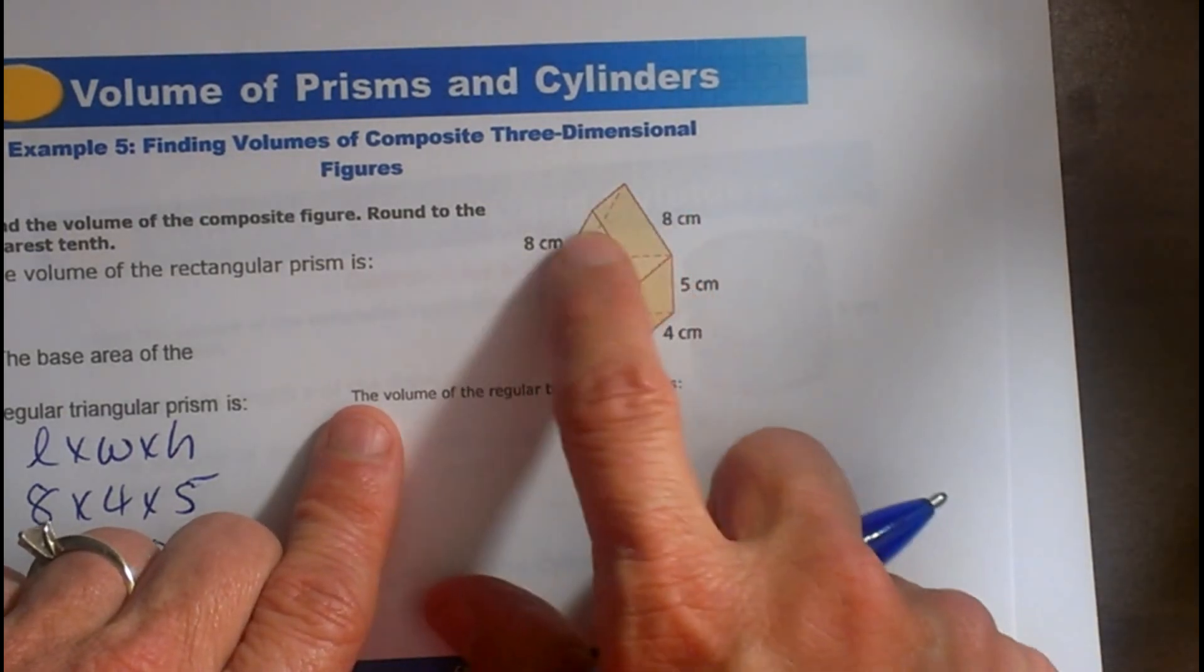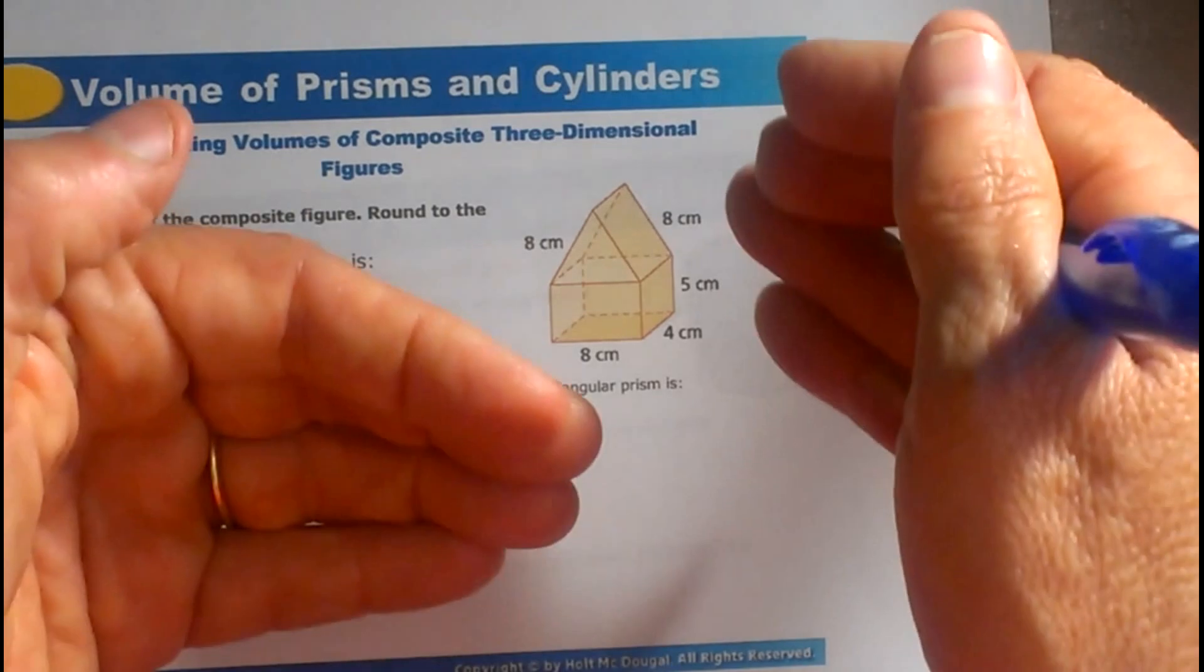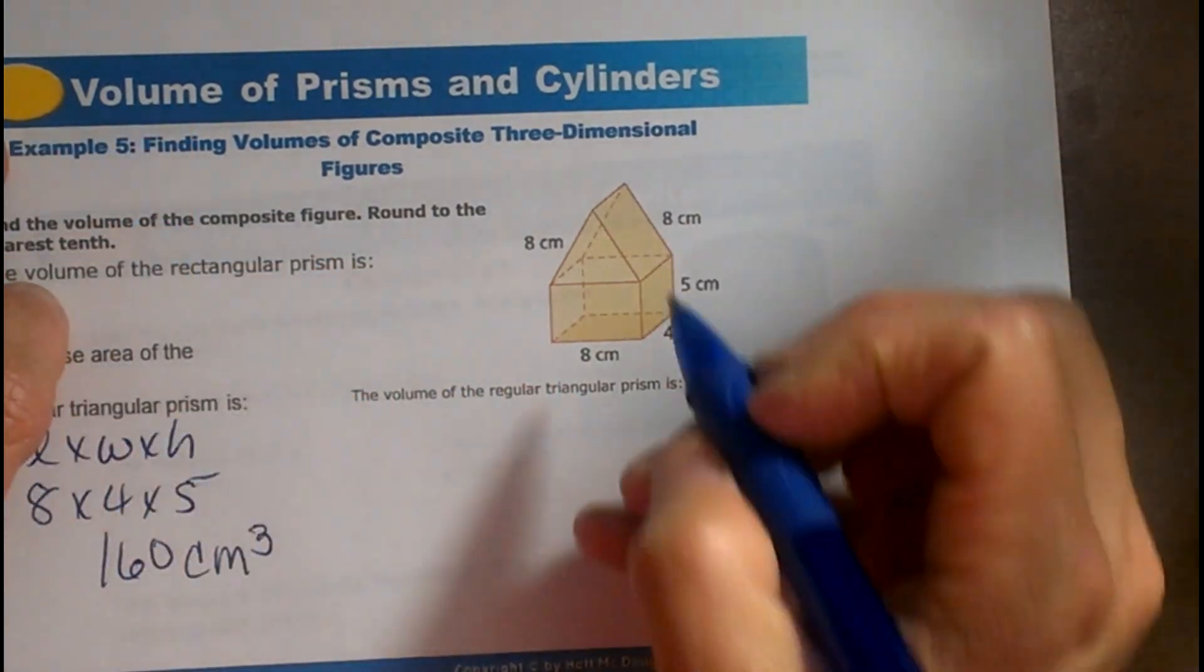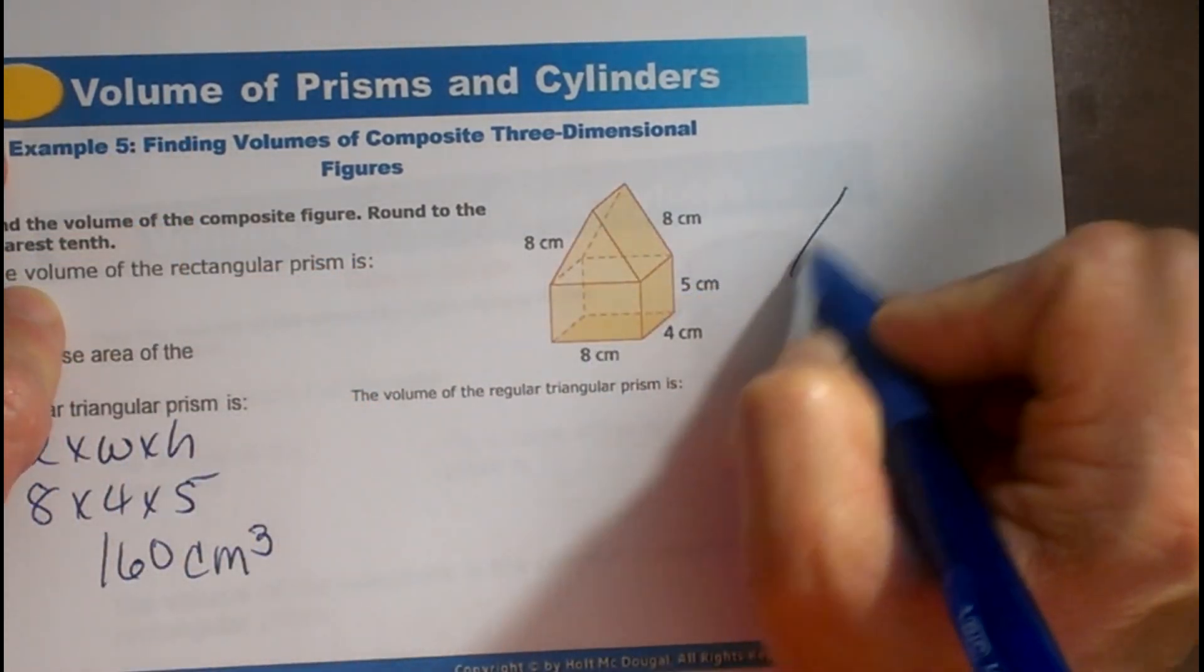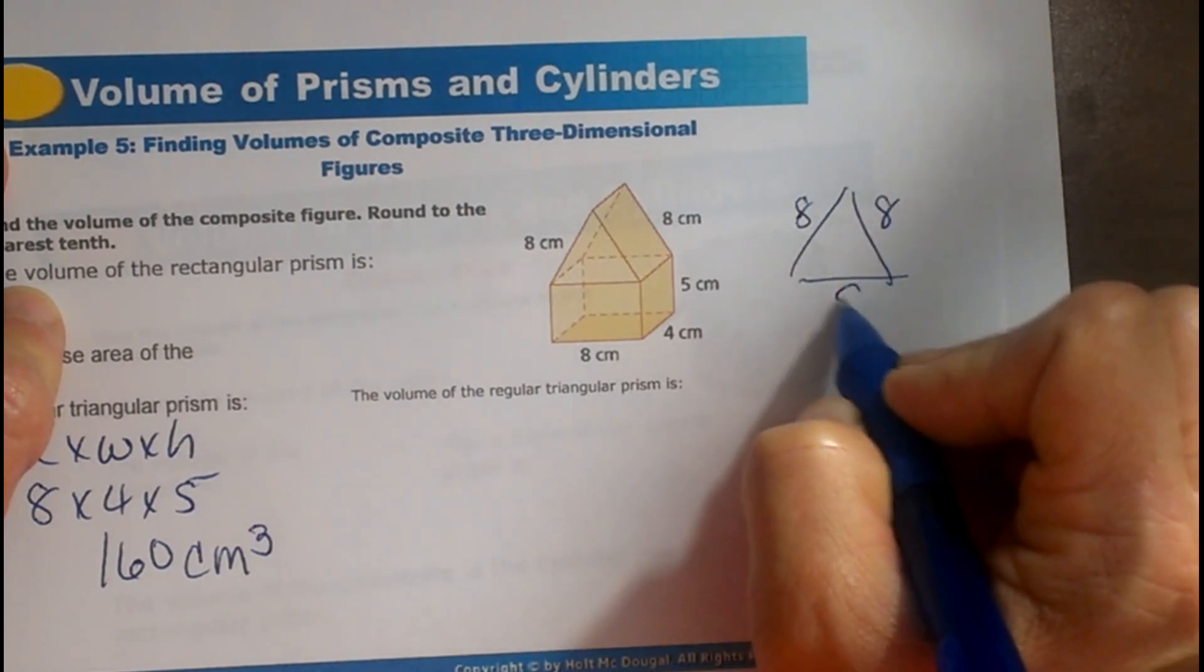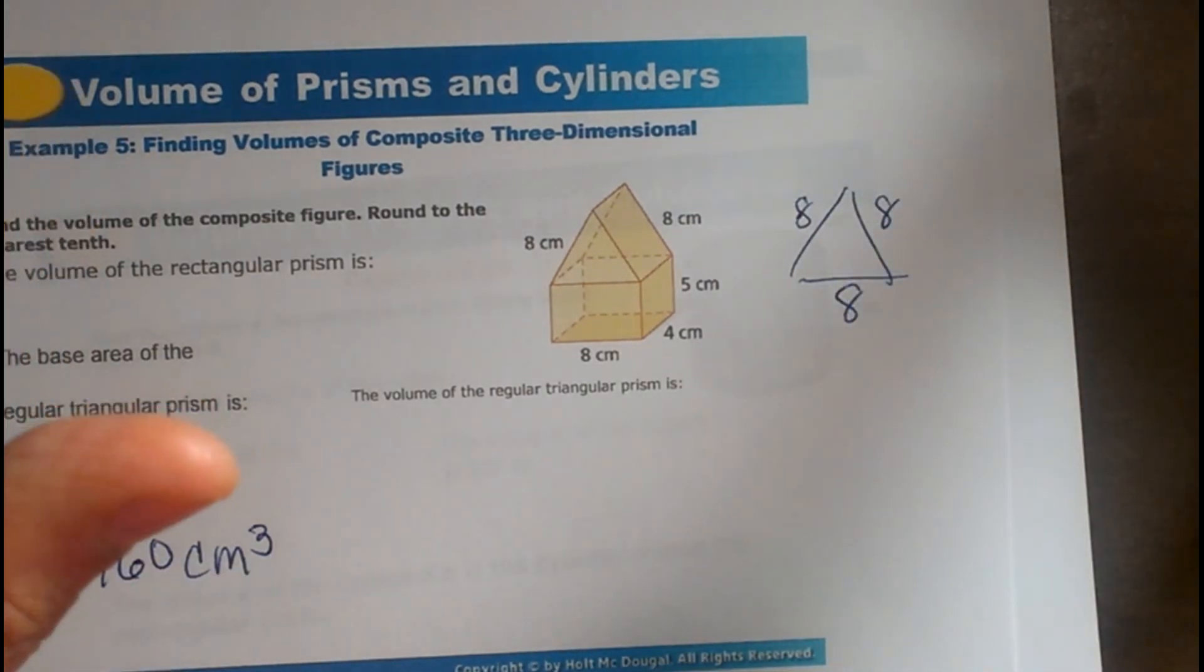So 160 cubic centimeters. Now let's find the volume of the regular triangular prism, this triangle right here. Do you see how they're parallel to each other? That's how you can tell. We've got to find the area of an equilateral triangle. We did that in the warm-up.